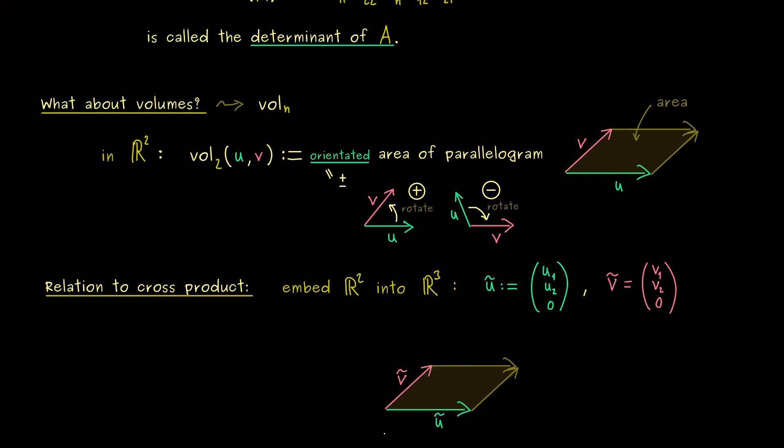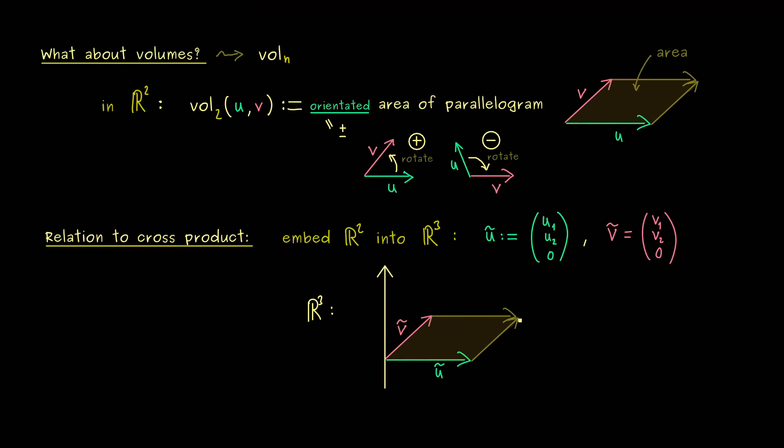So the pictures of the vectors would look the same but now there is an additional third axis. So this means now we are able to use the cross product defined in R3. And of course we have to use it for u tilde and v tilde, and then we know that we get the area of the parallelogram by the length of the result of the cross product.